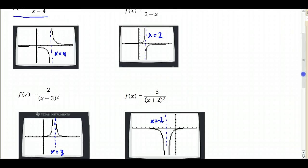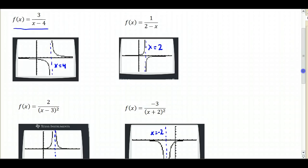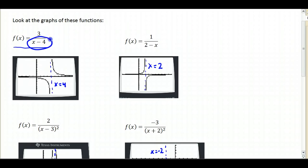So what's the common thread of all these graphs? We have vertical asymptotes everywhere that will make the denominator 0 of each function. So if I say that x minus 4 equals 0, then x equals 4. That's our vertical asymptote.